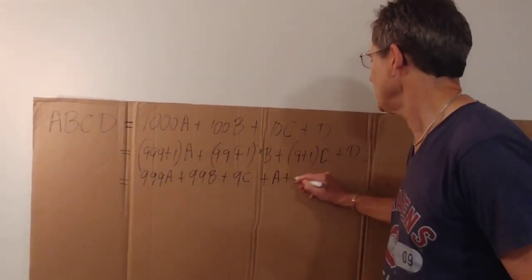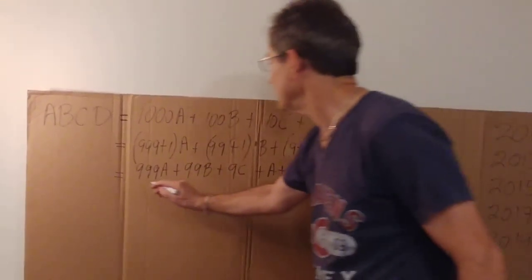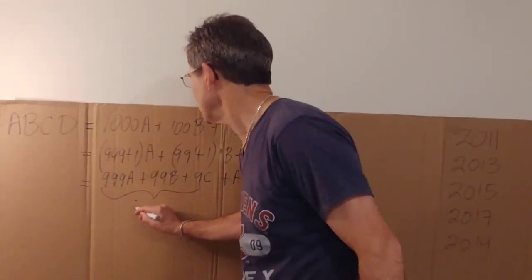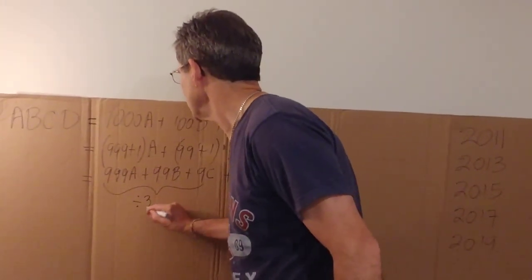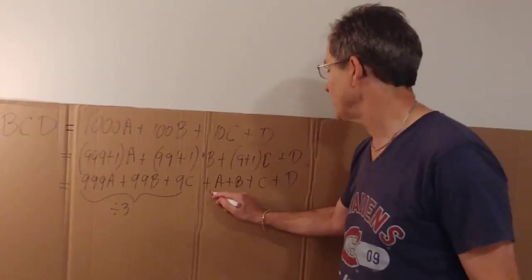plus A plus B plus C plus D. Now clearly those three terms are divisible by three. One way to see that is you could divide a three out of all three terms and then divide by three.